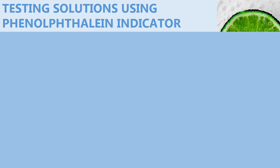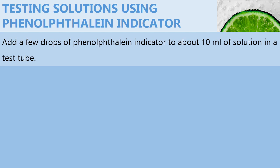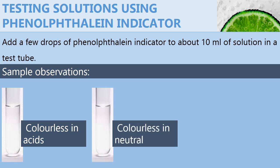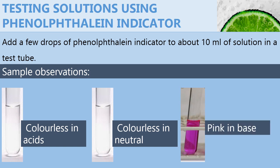Just like the flower extract indicators, we can use commercial indicators to test for a solution. For example, let us start with phenolphthalein indicator. You add a few drops of phenolphthalein indicator to 10 ml of a solution in a test tube. It will show a colorless color if the solution is acidic, colorless if neutral, and it will turn pink if the solution is basic.